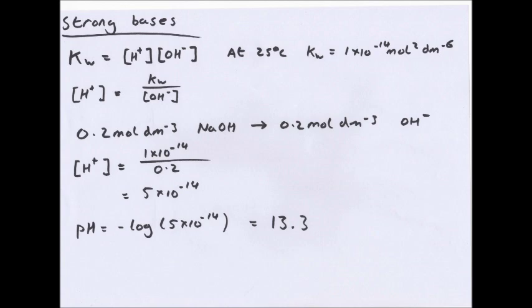For strong bases we use Kw, the ionisation of water. Starting from the equilibrium H₂O ⇌ H+ + OH⁻, we can write Kc = [H+][OH⁻] / [H₂O]. Multiplying across, Kw = Kc × [H₂O] = [H+][OH⁻]. At 25°C (298 K, standard conditions), Kw = 1 × 10⁻¹⁴ mol² dm⁻⁶. Therefore [H+] = Kw / [OH⁻].